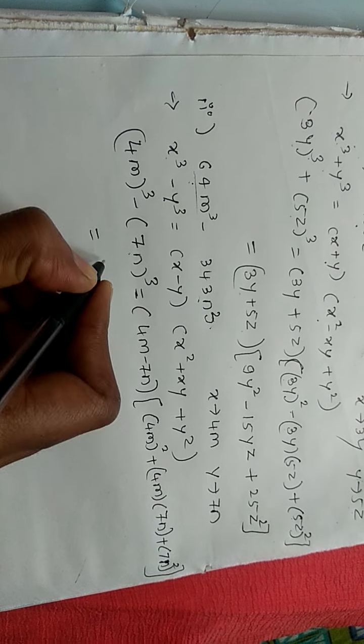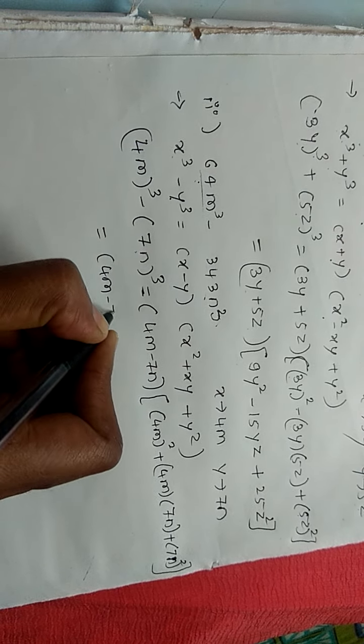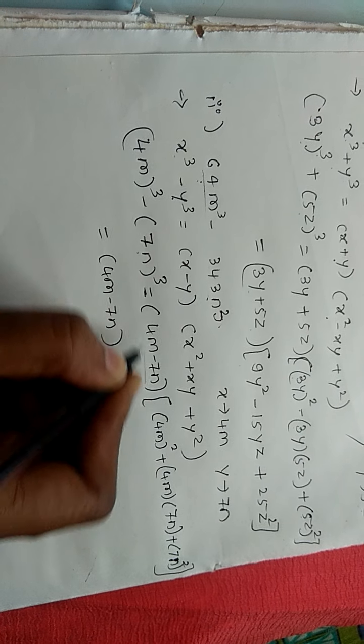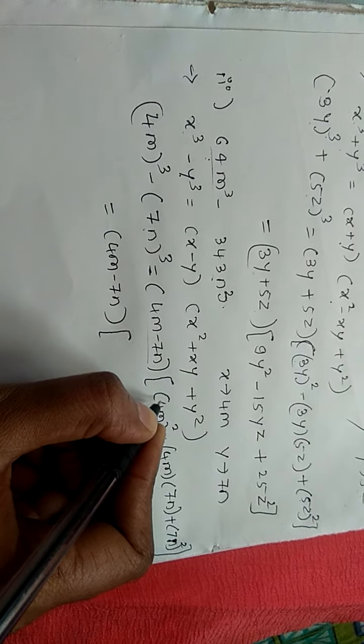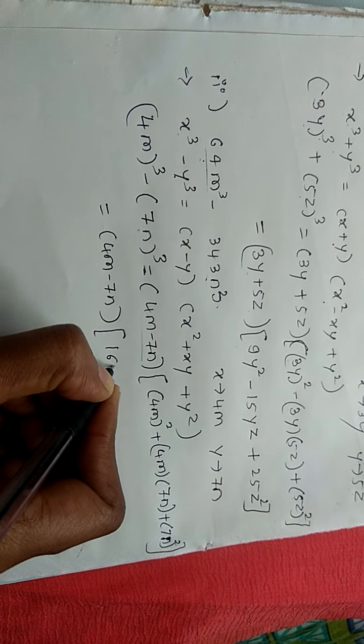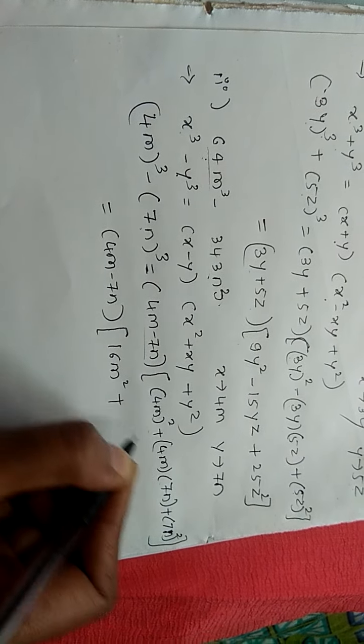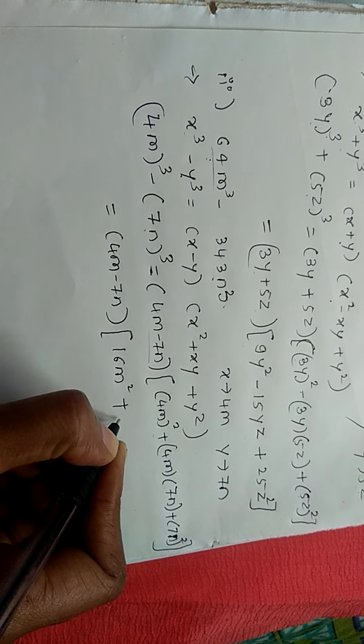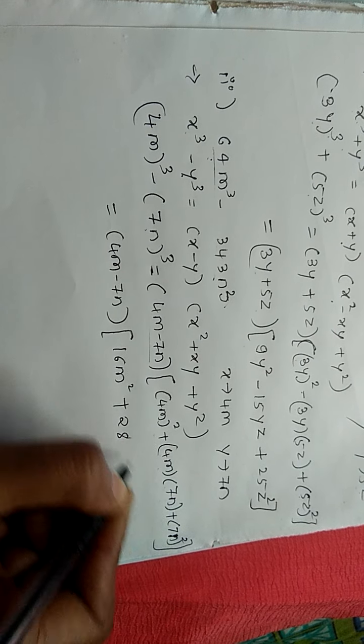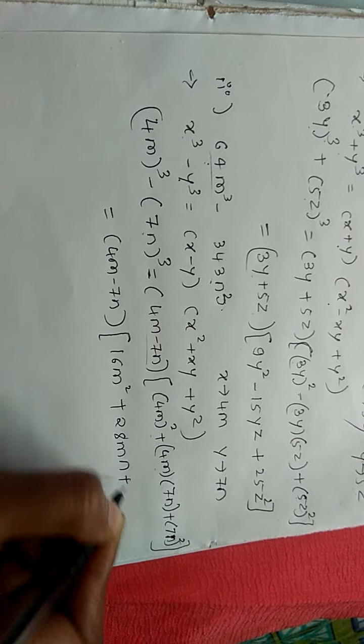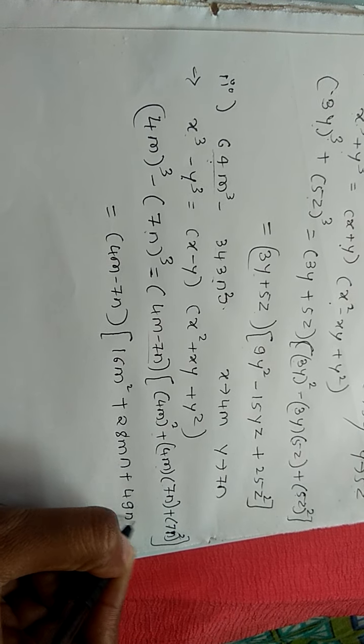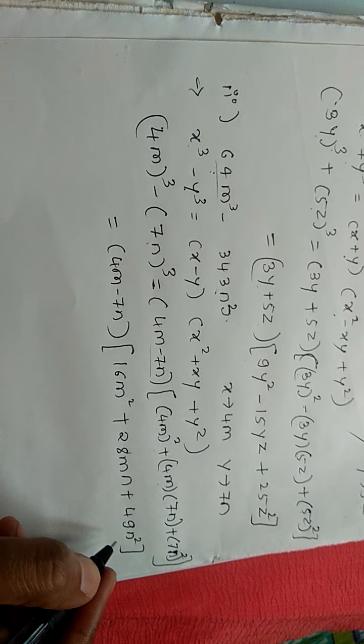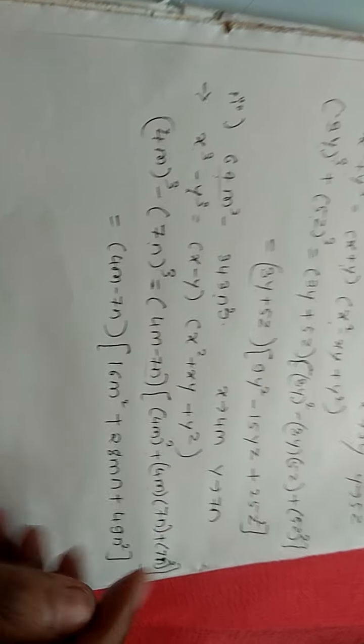So solve this bracket: 4 square is 16m square plus 4 times 7 is 28mn plus 7n whole square, 7 square is 49n square. Further we don't have like terms to add or subtract, so this is the factorization of 64m cube minus 343n cube.